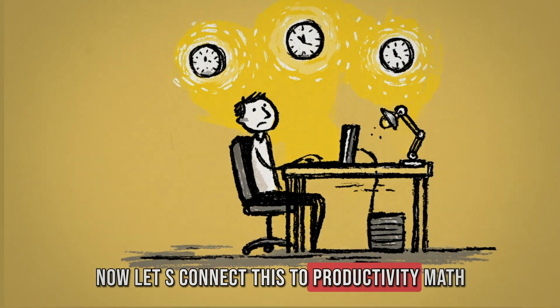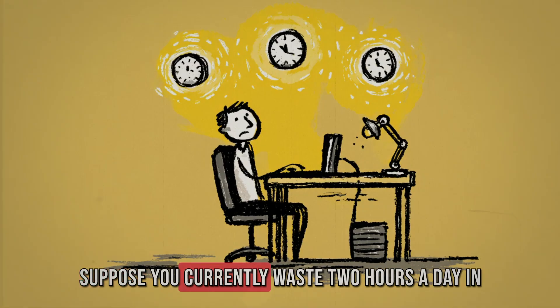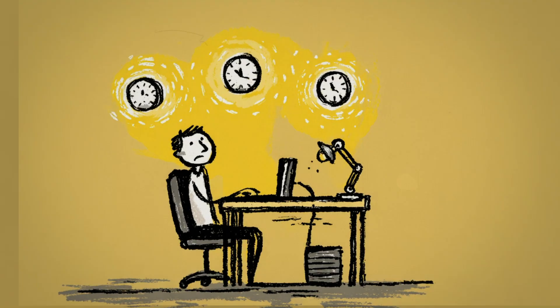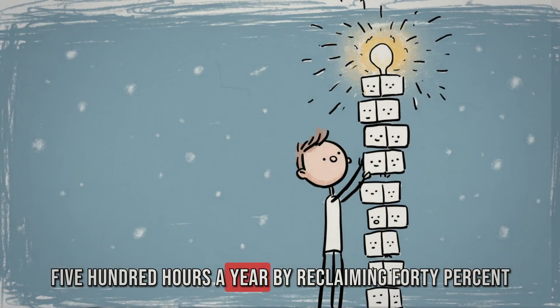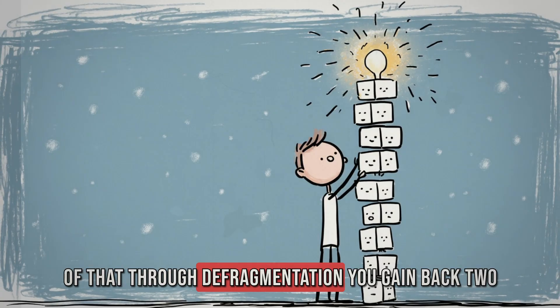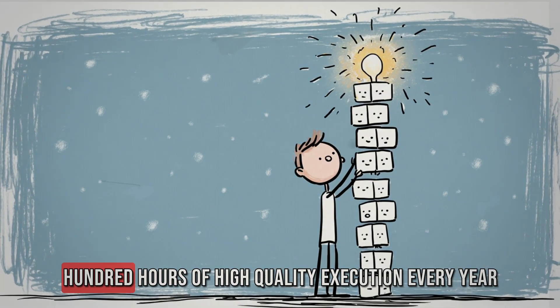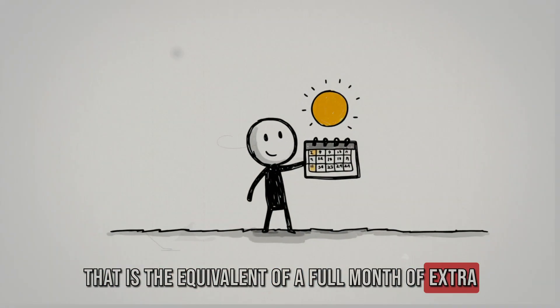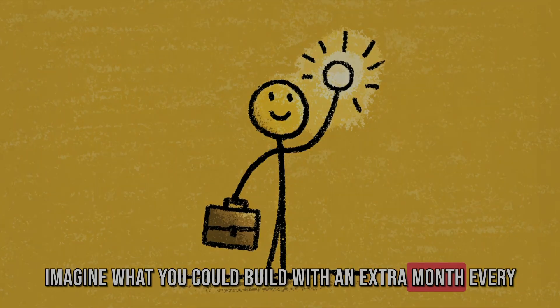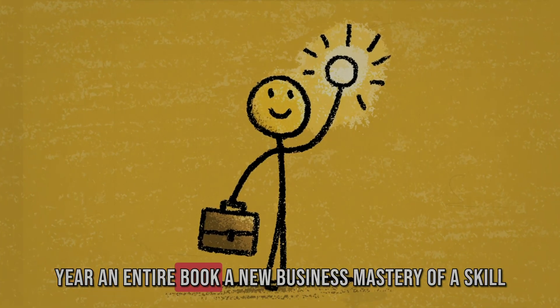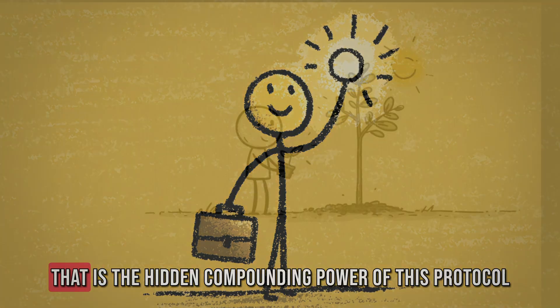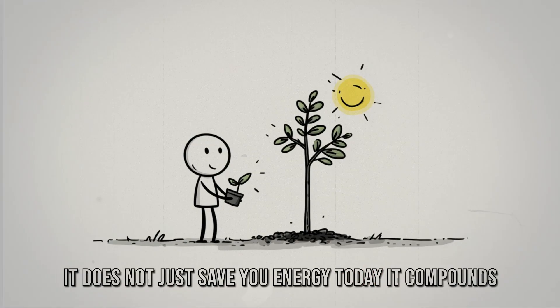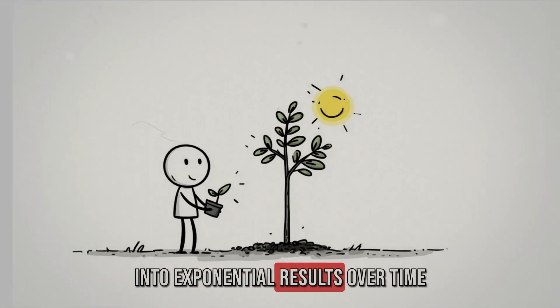Now, let's connect this to productivity math. Suppose you currently waste two hours a day in distraction and fragmented focus. That is 10 hours a week, 500 hours a year. By reclaiming 40% of that through defragmentation, you gain back 200 hours of high-quality execution every year. That is the equivalent of a full month of extra performance. Imagine what you could build with an extra month every year. An entire book, a new business, mastery of a skill. That is the hidden compounding power of this protocol. It does not just save you energy today. It compounds into exponential results over time.